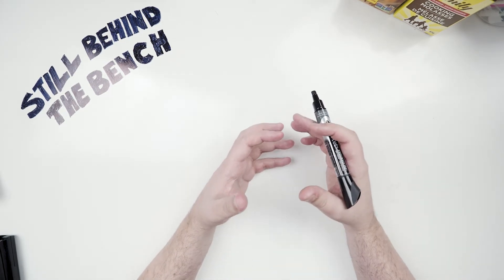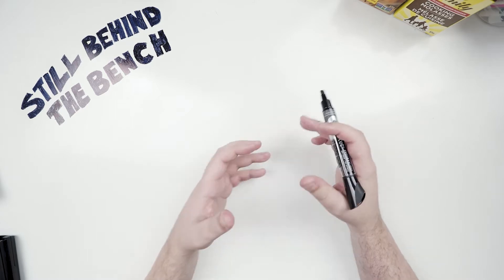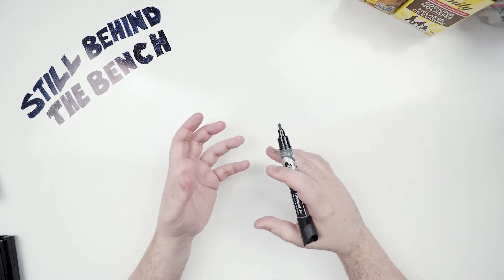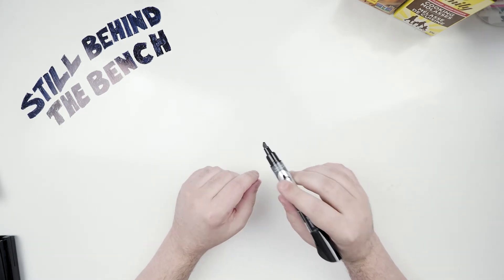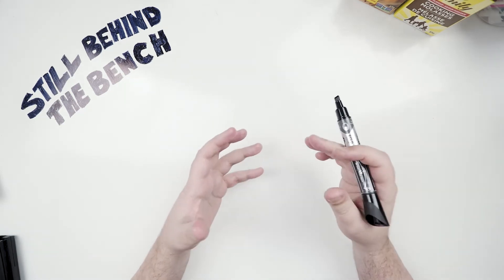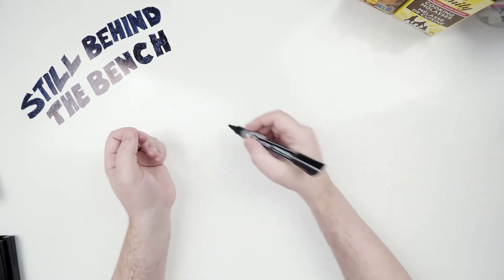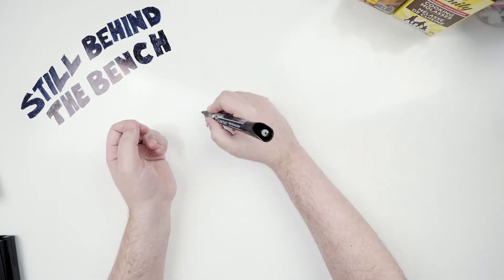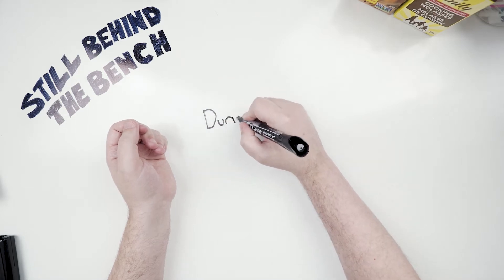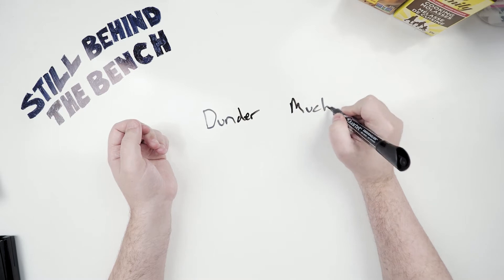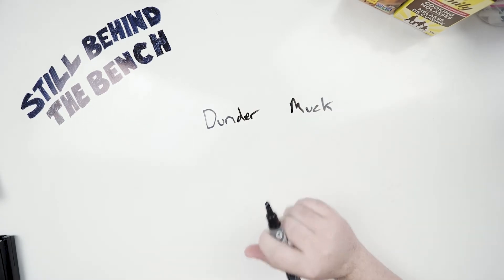Doing a rum with just molasses is actually pretty easy once you come to terms with the idea that you won't be able to accurately predict the outcome like you can with other feedstocks when you're making other spirits. But first let's talk about dunder and muck. You don't need to use either of them to make a good rum, but you should know what they are.